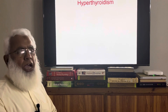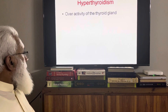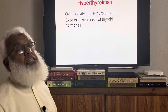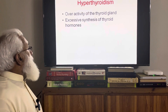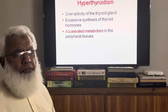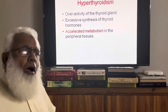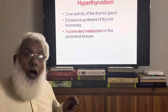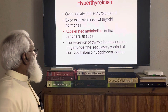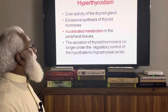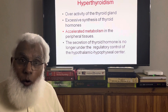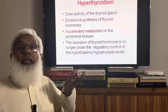First we discuss hyperthyroidism — overactivity of the thyroid gland and excessive synthesis of thyroxines T3 and T4, the metabolic hormones. This leads to accelerated metabolism in peripheral tissues; most tissues are overactive, all systems are overactive. The secretion of thyroid hormone is no longer under the regulatory control of the hypothalamo-hypophysial axis — when thyroxine level is high it should be suppressed.